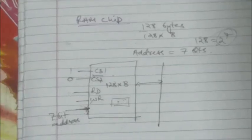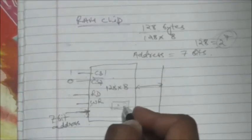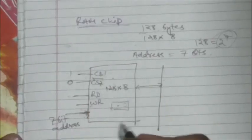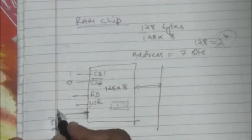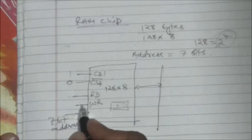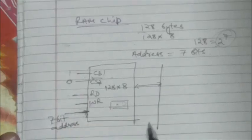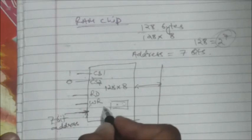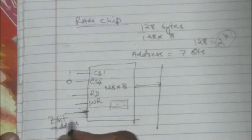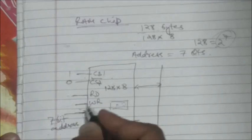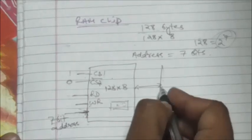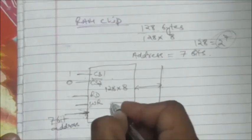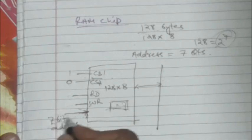For the write operation, the chip must again be enabled through the chip select inputs. When CS1=1 and CS2-bar=0, the chip is enabled. The write input should then be enabled, and the address where data is to be written should be provided at the 7-bit address input. Whatever content is on the data bus will be stored in memory at that address.